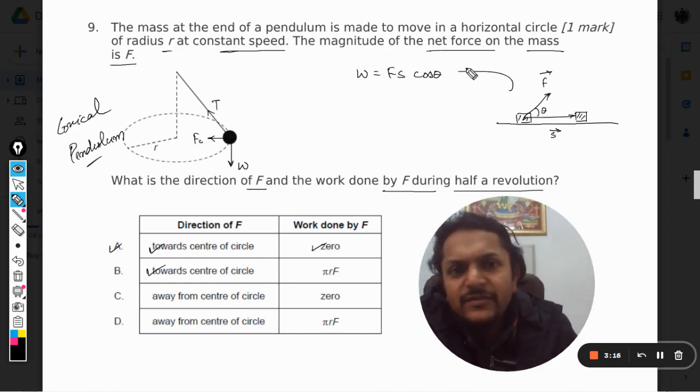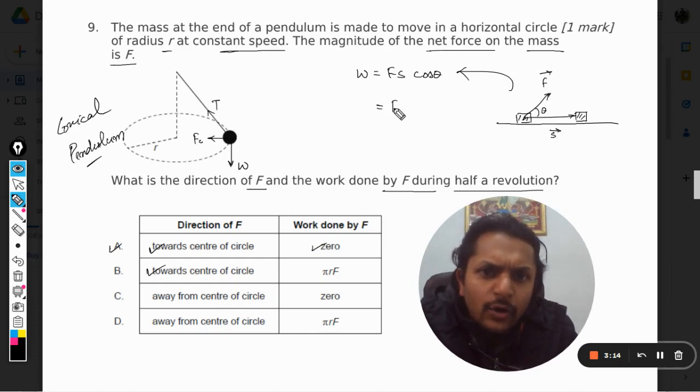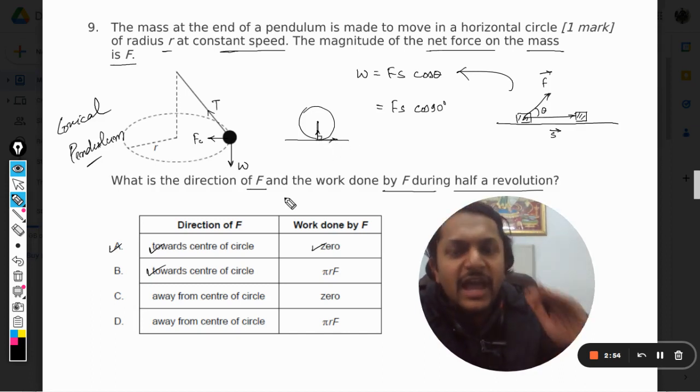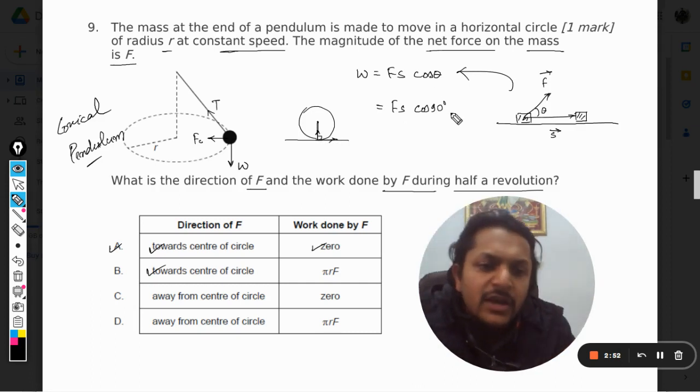But in the case of centripetal force and displacement, the angle becomes 90 degrees. Why? Because in this circle, the angle between the tangent and the radial vector (that is the centripetal force) is always 90 degrees. The angle between the tangent and the radius is 90 degrees.